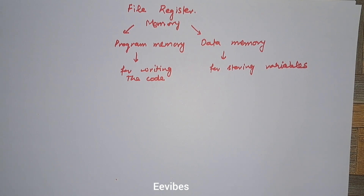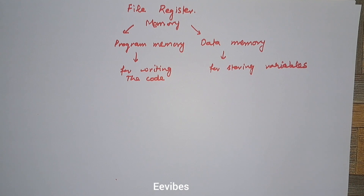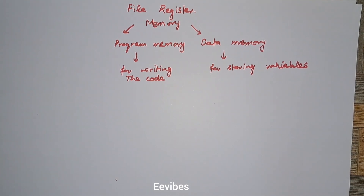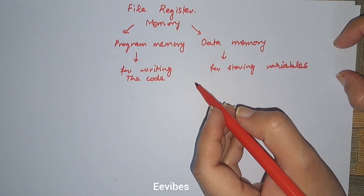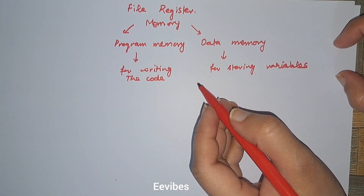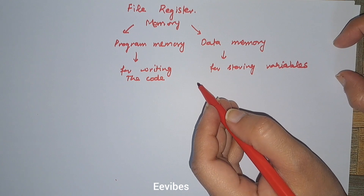Just like the W register, the PIC microcontroller has many other registers. They are called the data memory space, to distinguish them from the program memory space. The data memory space in the PIC is read-write memory. The file register is read-write memory used by the CPU for data storage, and it can also be used as a scratch pad. Some parts can be used for internal purposes or other special functions.